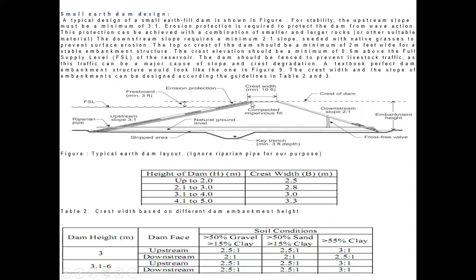For erosion protection, stone pitching or riprap is provided on the upstream and downstream sides of the embankment. The upstream slope is generally taken as 3:1 and the downstream side as 2:1. It depends upon the materials used.